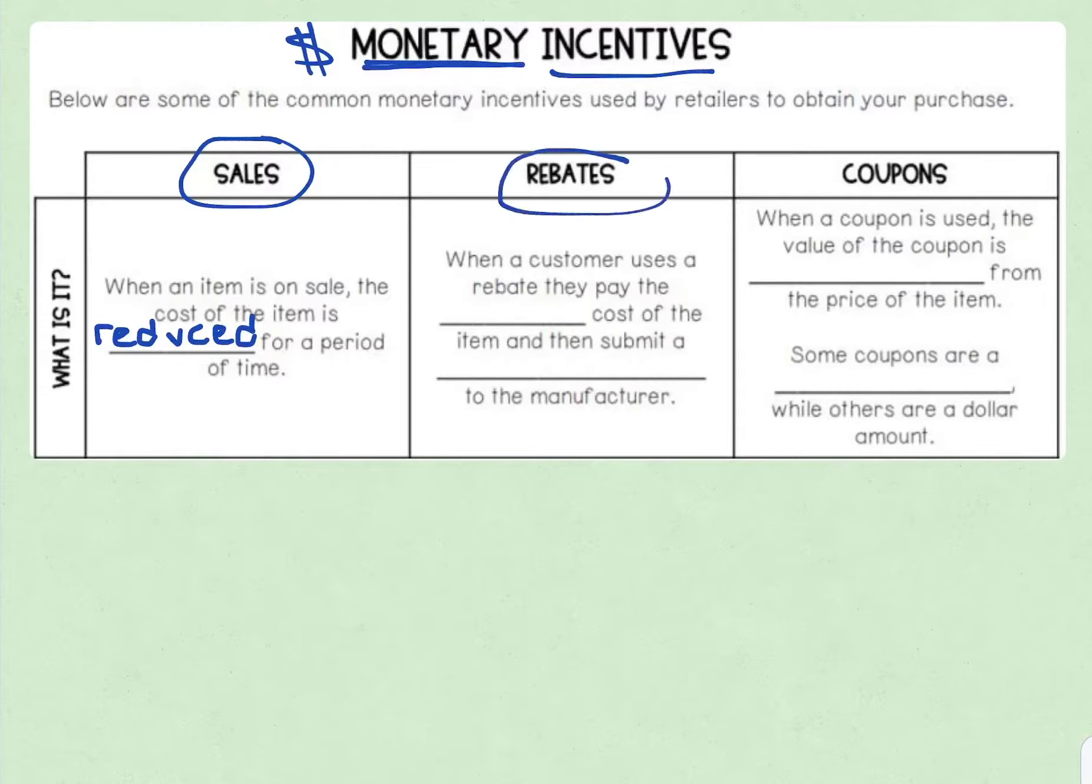The next type we have are rebates. When a customer uses a rebate, they pay the full cost first. They pay the full amount of the item, and then they submit a reimbursement to the manufacturer. And what that means, reimbursement, is that you will get some money back in the mail or electronically. It could be a percentage back or a dollar amount, but you'll get that back from the manufacturer.